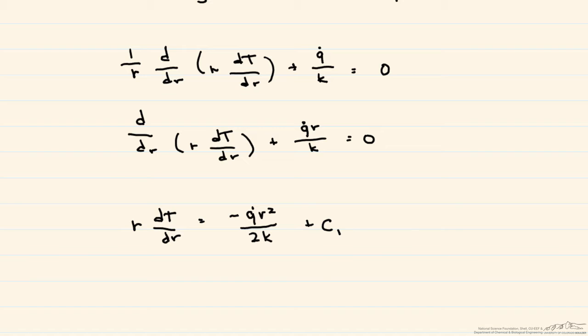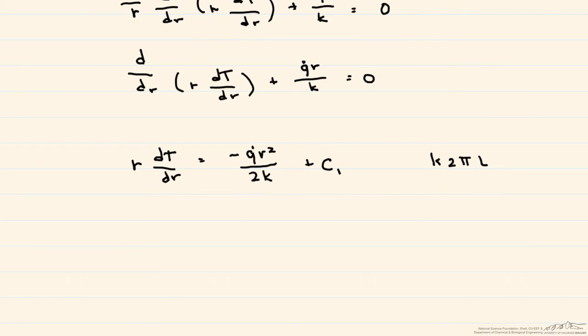We're going to multiply through by k, as well as 2πL, and let's see what we get here. Note I switched the negative around, and we're going to incorporate that 2πL times k in our constant.